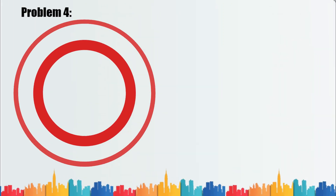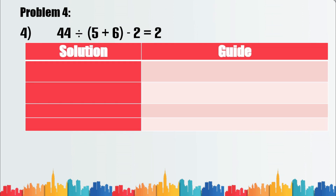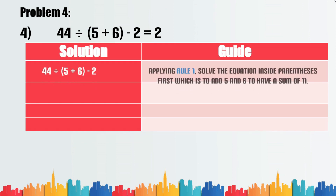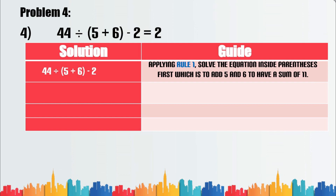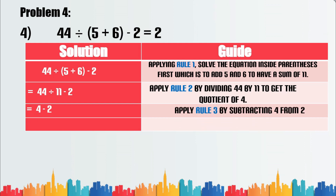Problem number four: 44 divided by (5 plus 6) minus 2 equals 2. Applying rule 1, solve inside the parentheses first — add 5 and 6 to get a sum of 11. Apply rule 2 by dividing 44 by 11 to get the quotient of 4. Apply rule 3 by subtracting 2 from 4. The difference is 2.